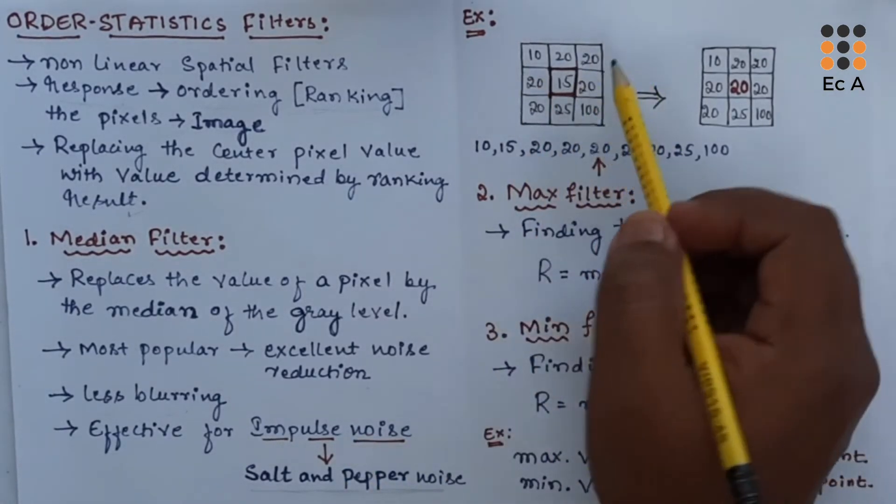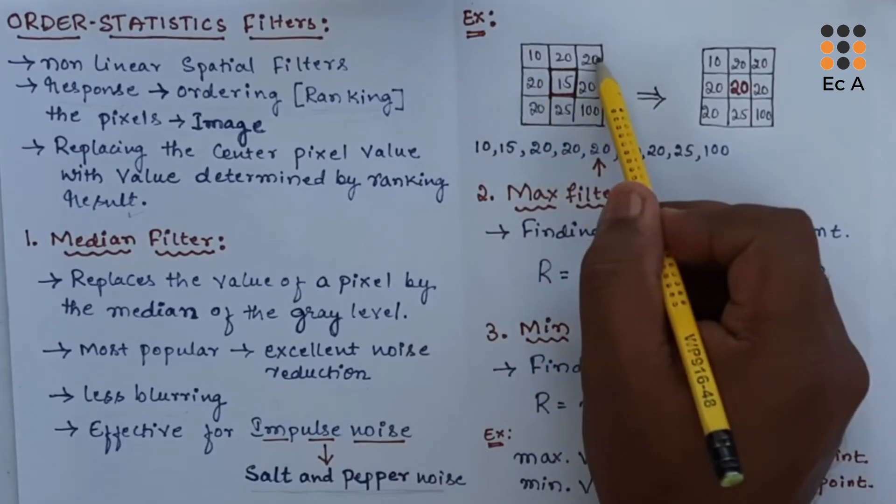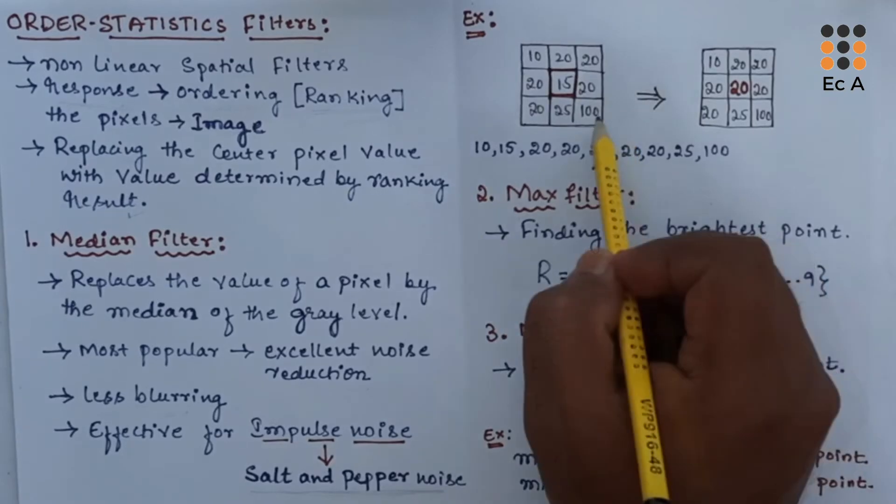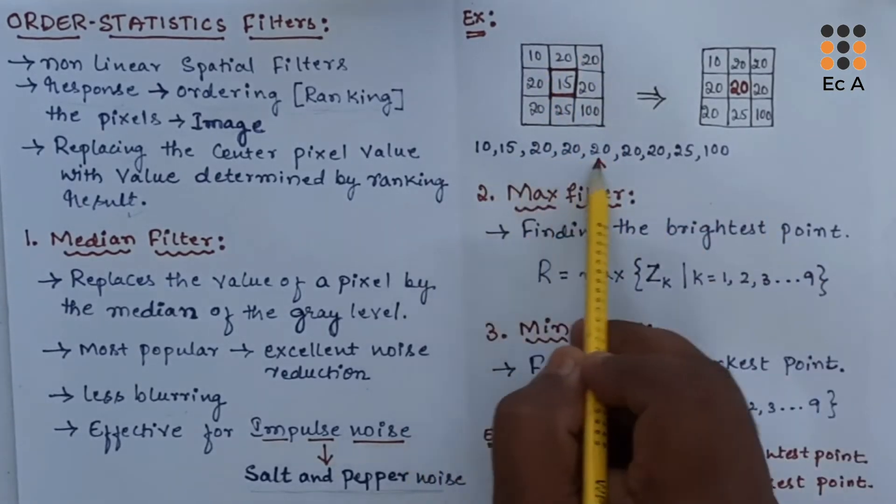Let us take an example to understand the median filter. This is the pixel of an image. We have considered 3 by 3 image pixels. Here the image pixels are arranged in ascending order.